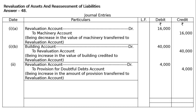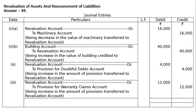Part 3: Provisions for Warranty Claims to be increased by 12,000 — this is an increase in liability. Increase in liability is an expenditure and debited to Revaluation Account. Revaluation Account debited to Provision for Warranty Claims Account: Rs. 12,000 debit and Rs. 12,000 credit. Being increase in the amount of provision transferred to Revaluation Account. When the journal is totaled, both the Debit and Credit columns amount to Rs. 72,000.